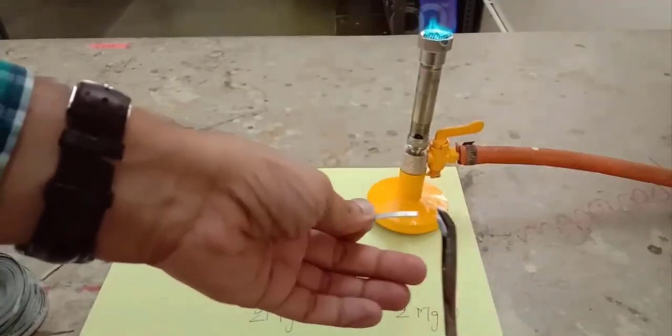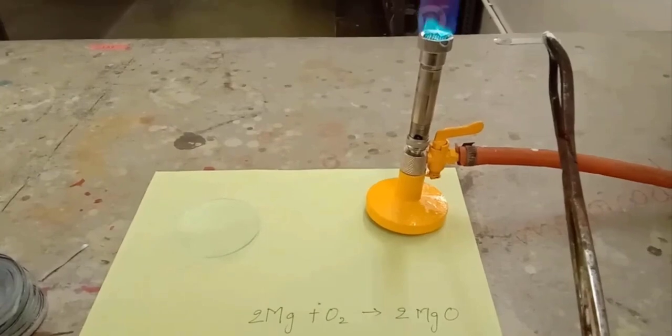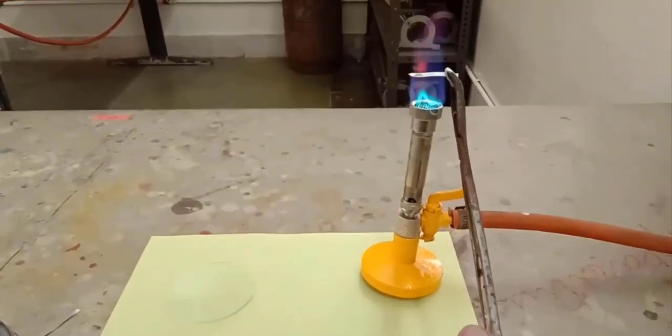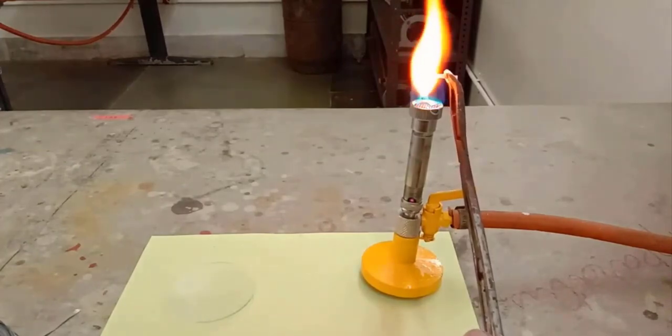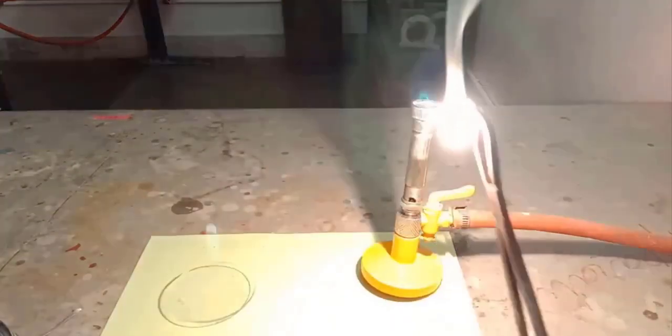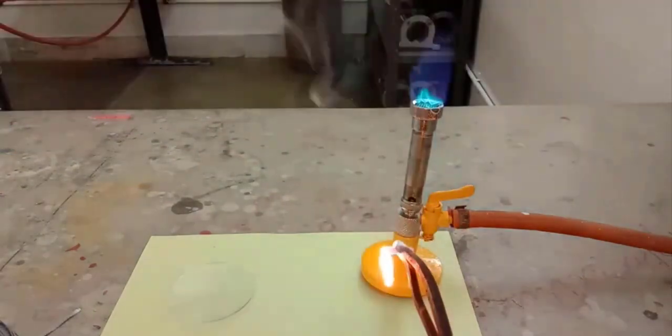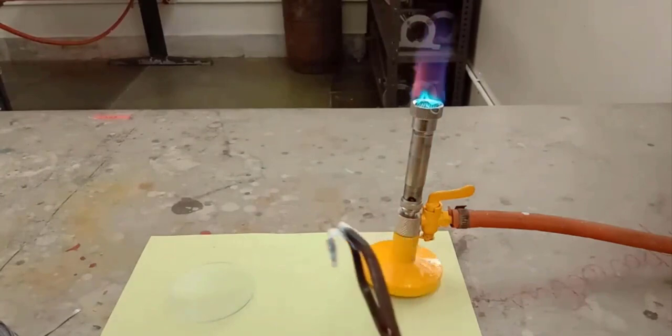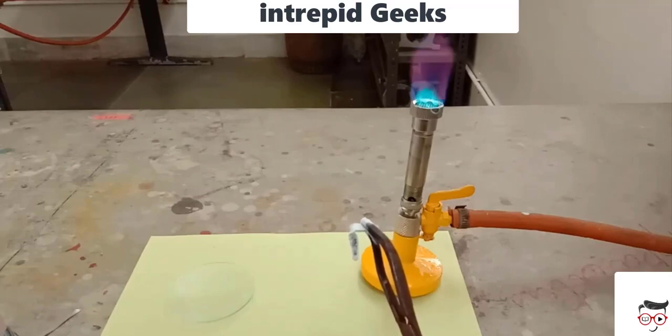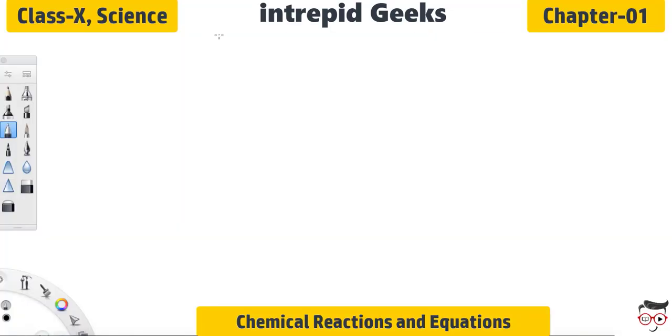Let me show you a small video. From the results we can conclude that whenever there is a chemical reaction takes place there are certain things which can be noted from the chemical reaction.